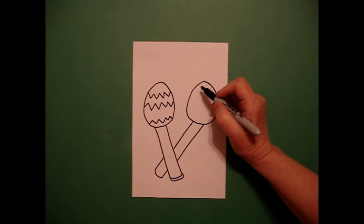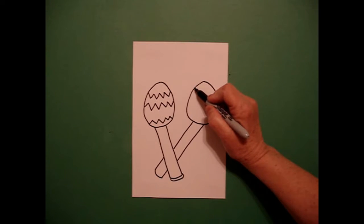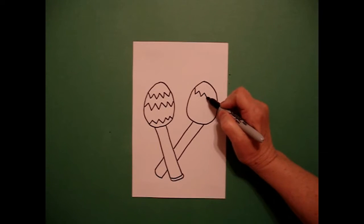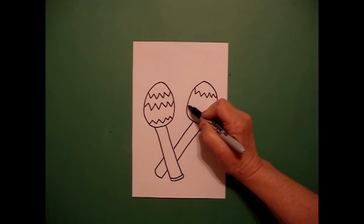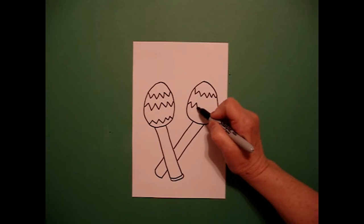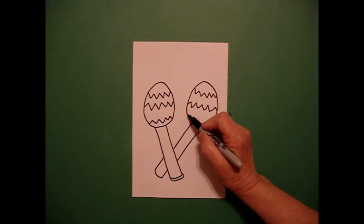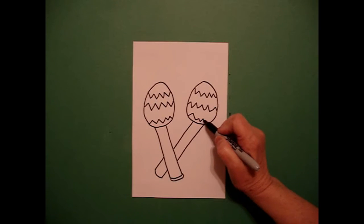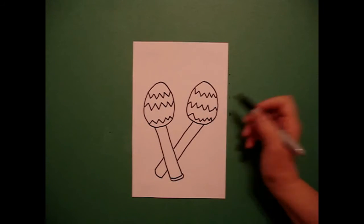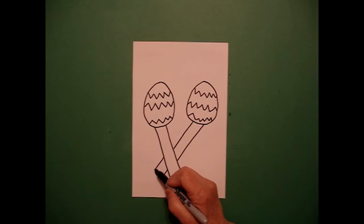I come on the right-hand side and I'm going to do the same thing. Zig-zag, zig-zag, zig-zag, zig-zag, zig. Come down, zig-zag, zig-zag, zig-zag, zig. And on the very bottom, zig-zag, zig-zag, zig-zag, zig. And on this end, I'm going to put a little curved line to connect.